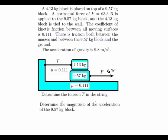A horizontal force of 63.3 is applied. So let's go ahead and write that down. It's 63.3 Newtons going this way. It's applied to the 9.57. This one's tied to the wall. The coefficient kinetic friction between all moving surfaces is 0.111.